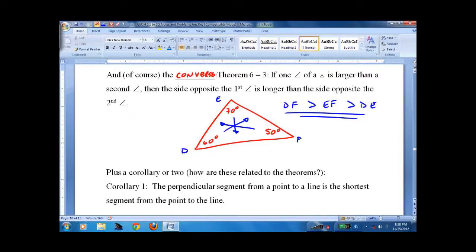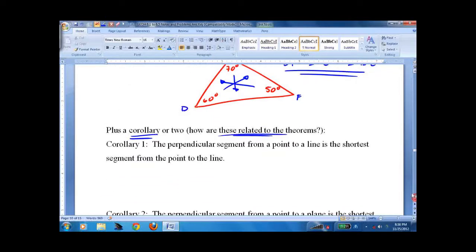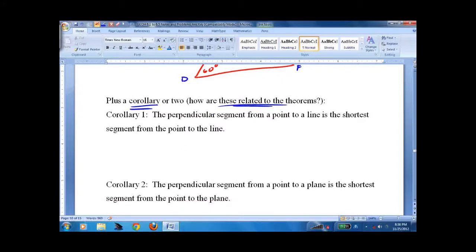The last two theorems here are quite simply useless, but they follow because they're corollaries. And if you can figure out how they're related, good for you. Perpendicular segment is the shortest segment from the point to the line. Well, you know, here's the line, here's the point. And what they're saying is the shortest is at 90 degrees.